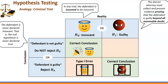That's called a Type 1 error. The second type of error occurs when a guilty person is declared not guilty. That can happen in a criminal trial if the district attorney failed to present enough evidence, and that person is set free, declared not guilty. In terms of statistics, it means the null hypothesis is not true,